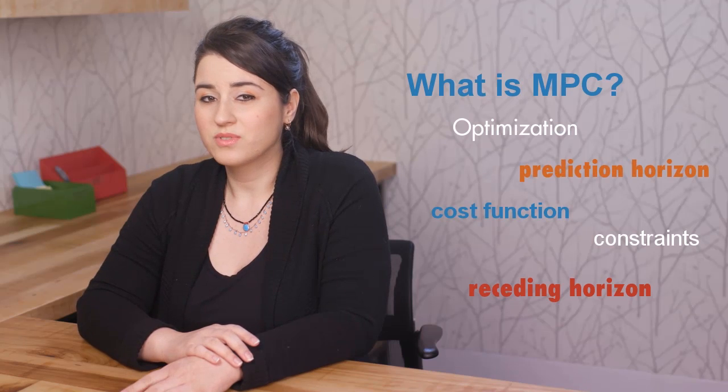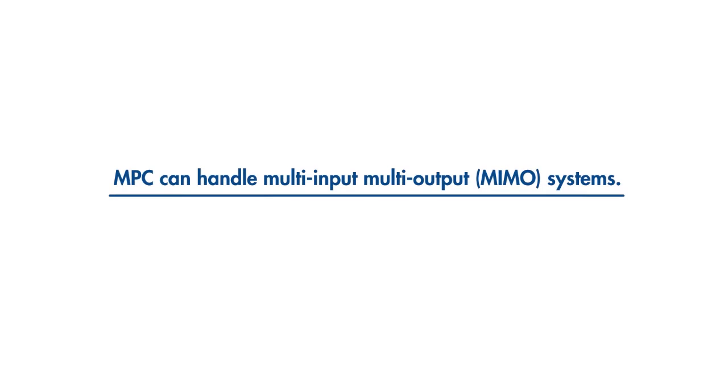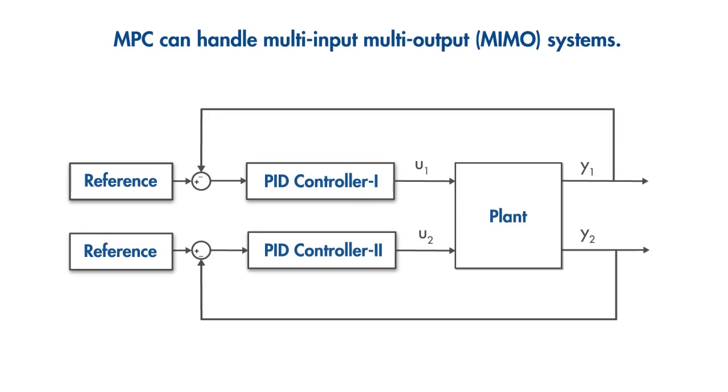Here are some of the reasons why you would want to use model predictive control. MPC can handle multi-input, multi-output systems that might have interactions between their inputs and outputs. For example, in this MIMO system, a change in the second output also affects the first output.